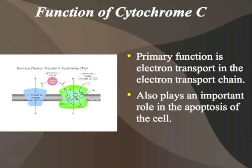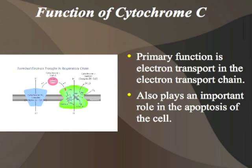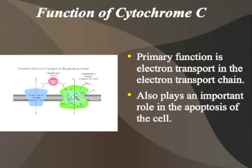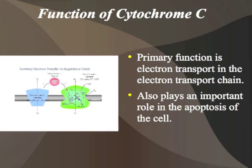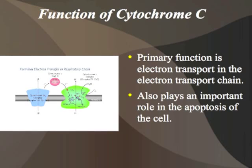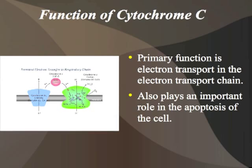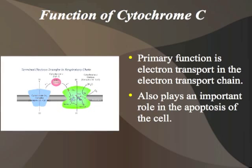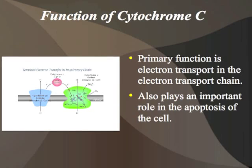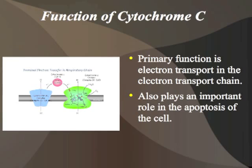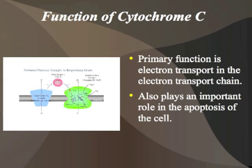The function of cytochrome C is primarily involved in the electron transport chain of the cell. This means it is involved in the energy production of cell life, making it a quite vital protein to organic life. It is an electron carrier — the heme attachment is used to carry one electron at a time, specifically from cytochrome B over to cytochrome C oxidase.